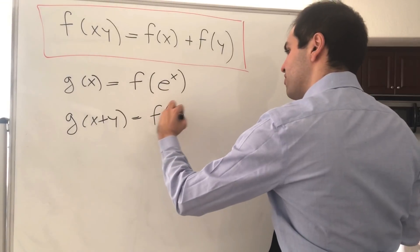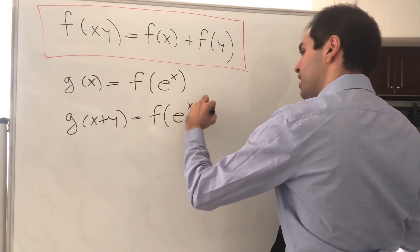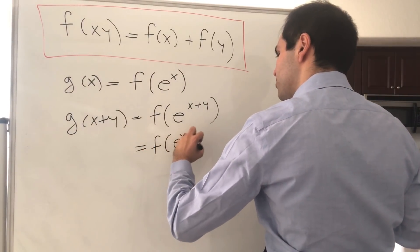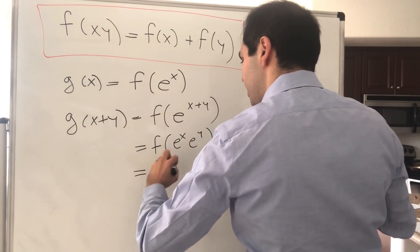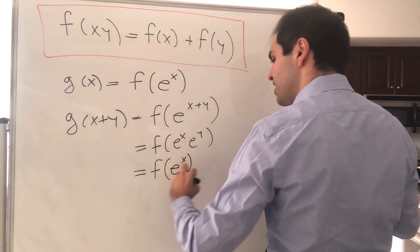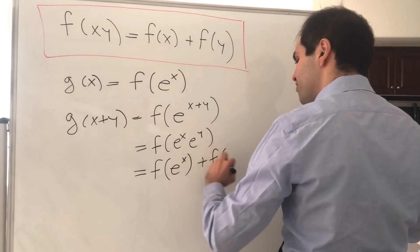That becomes f of e to the x plus y. And that becomes f of e to the x times e to the y. And that turns out to be, again by our identity, f of e to the x plus f of e to the y.